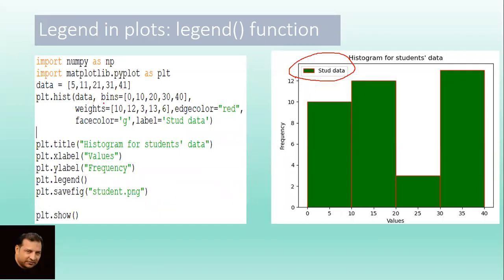Data equals 5, 11, 21, 31, 41. plt.hist(data, bins equals 0, 10, 20, 30, 40, weights, edge color, face color g. This is the main line: label equals student data.